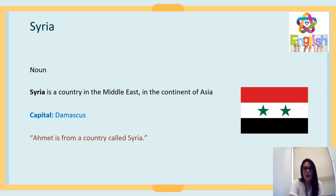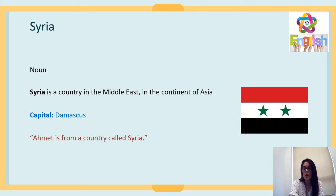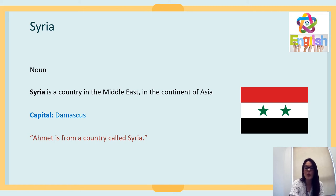Syria — I am not a geographer, as you'll soon discover about me. Syria is a country in the Middle East, in the continent of Asia. The capital of Syria is Damascus. Ahmet is from a country called Syria.